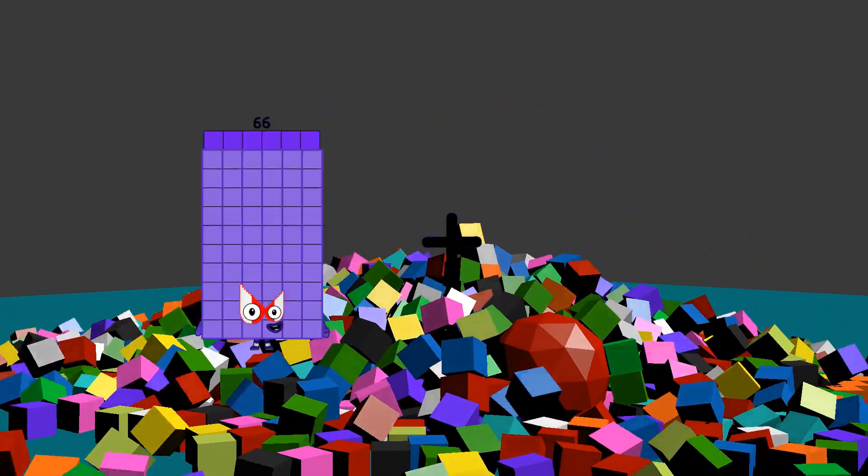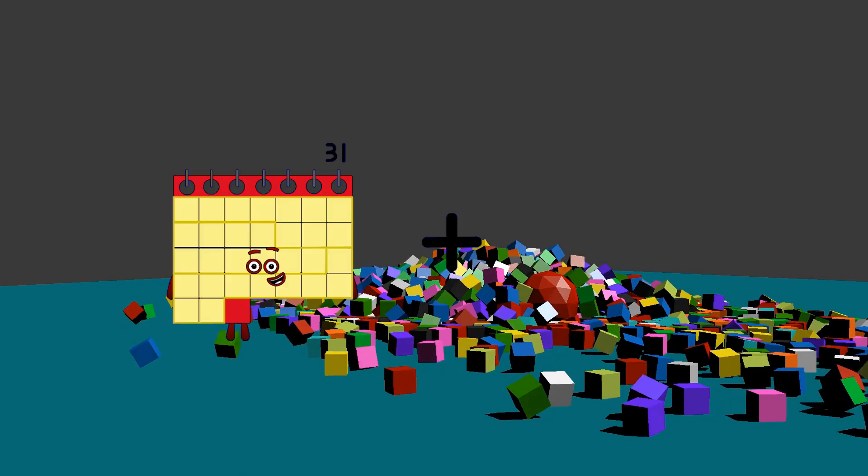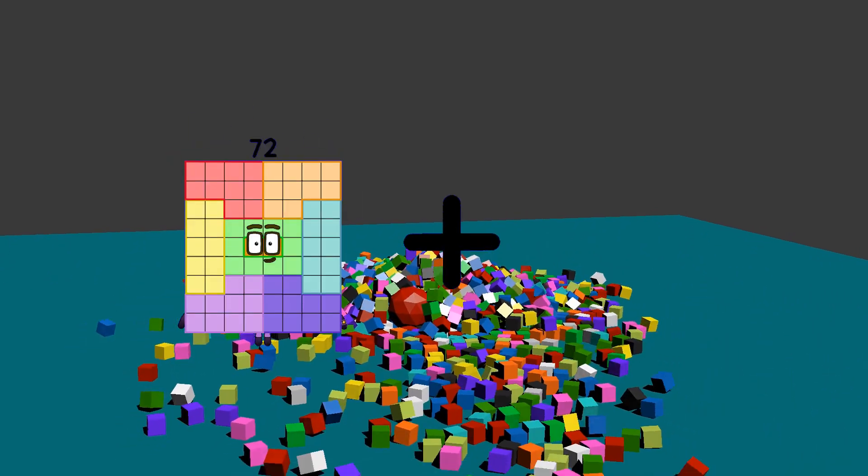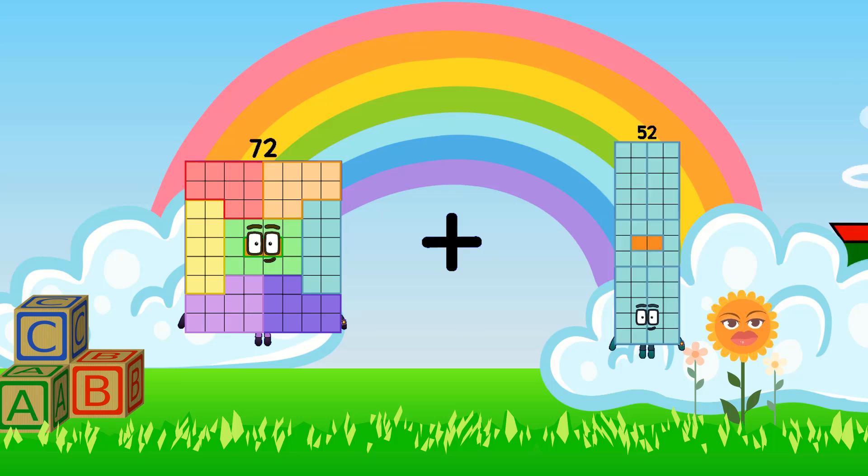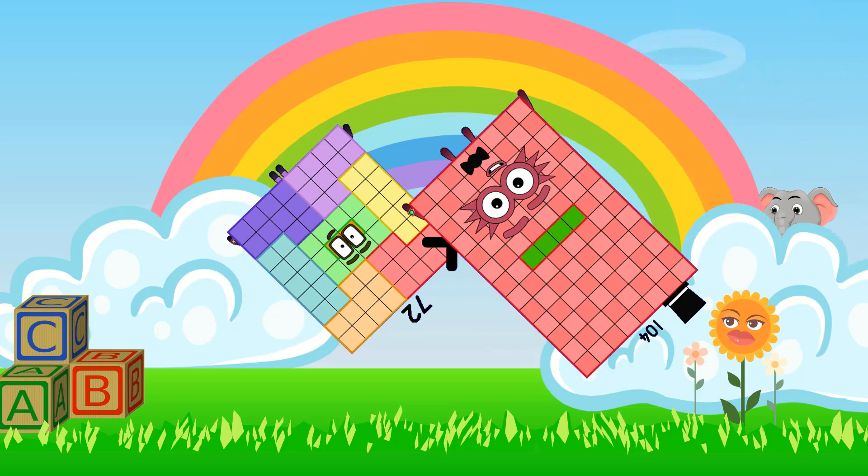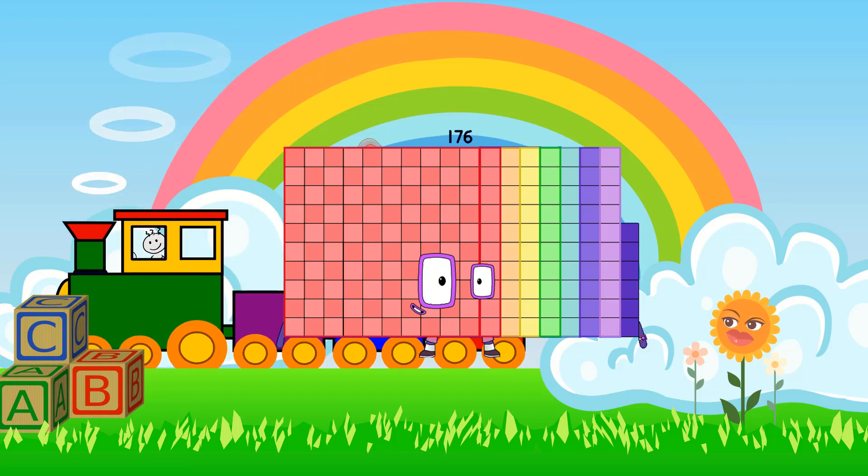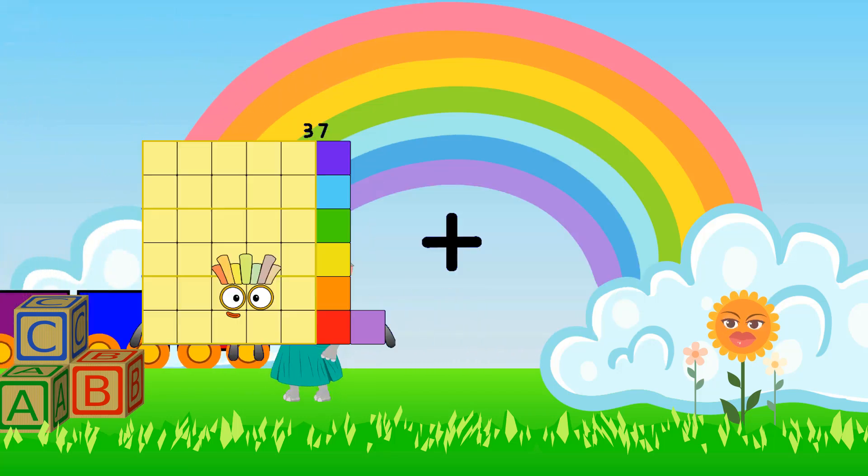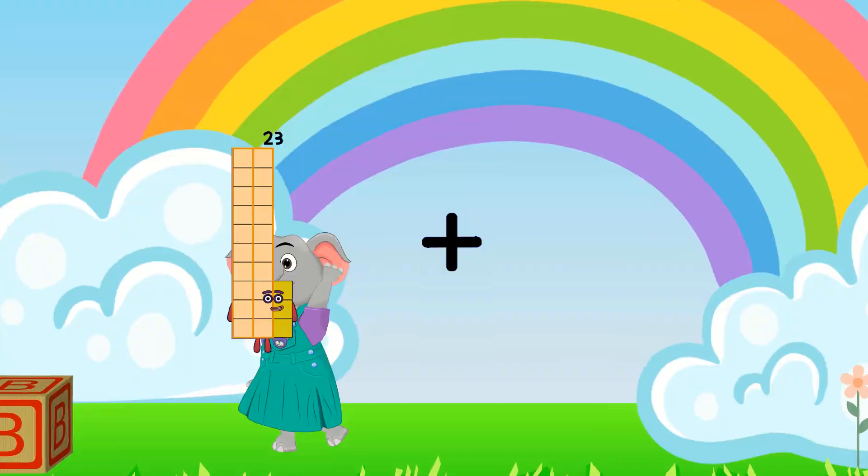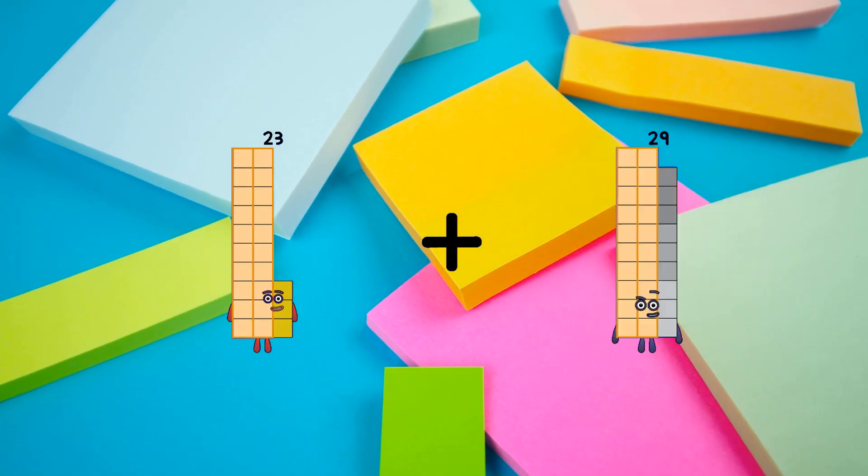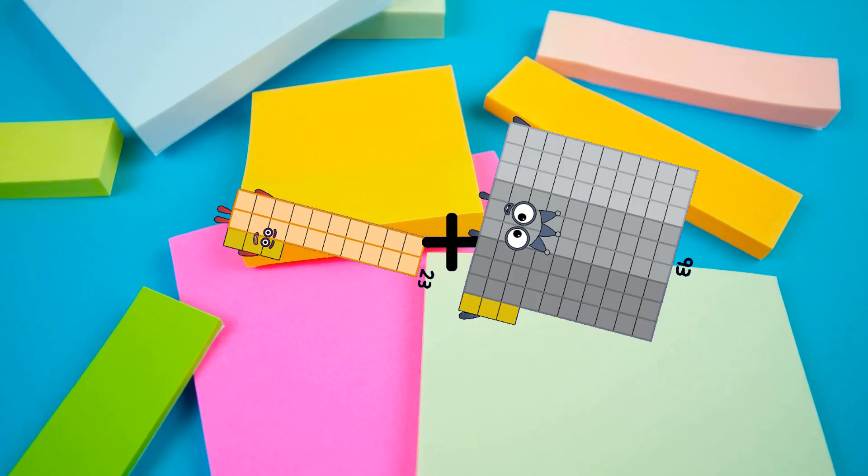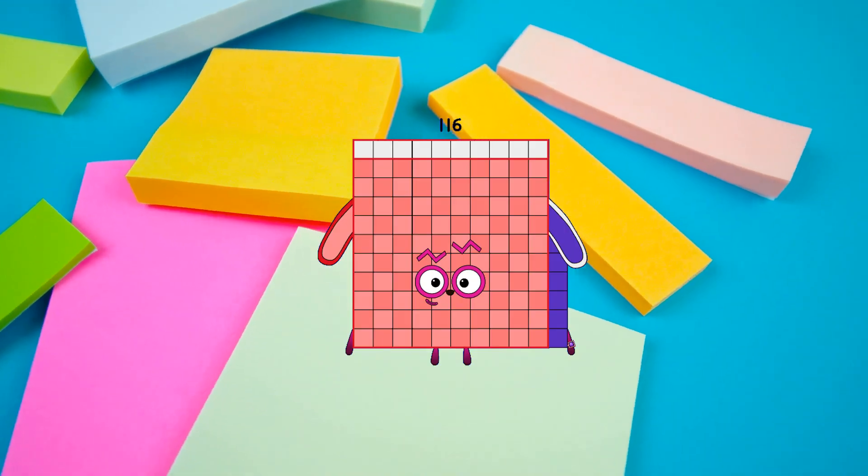72 plus 104 equals 176, 23 plus 93 equals 116